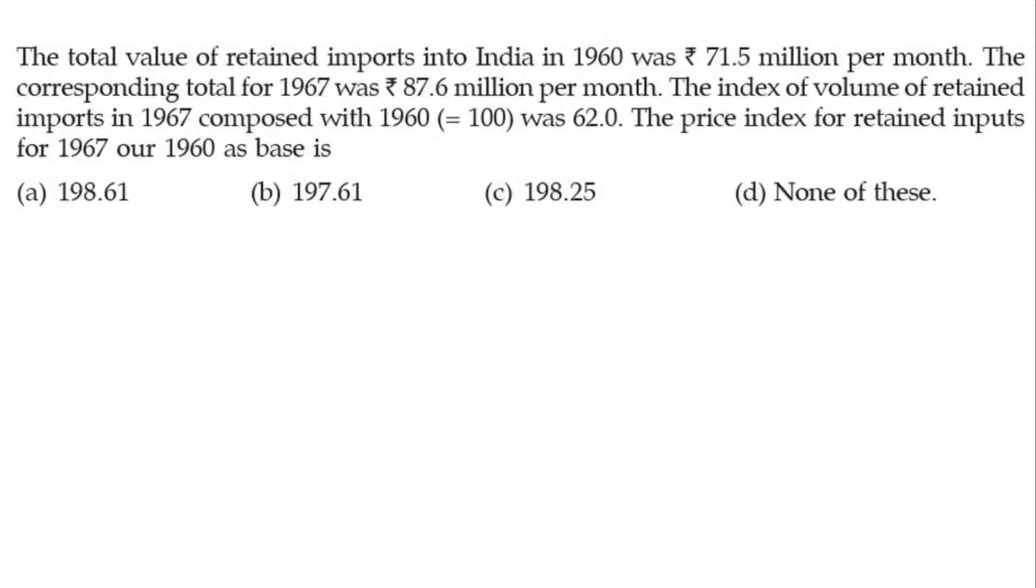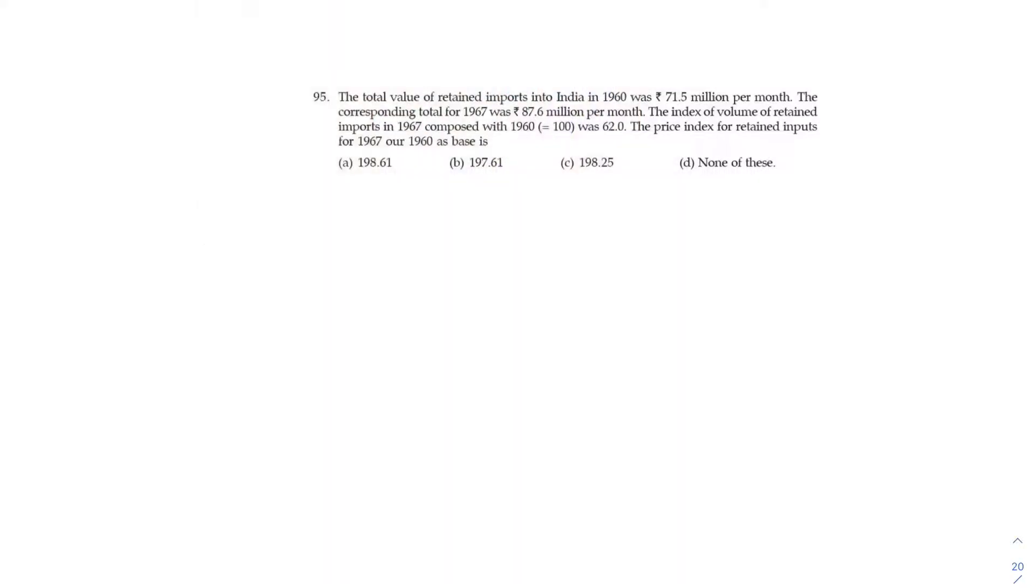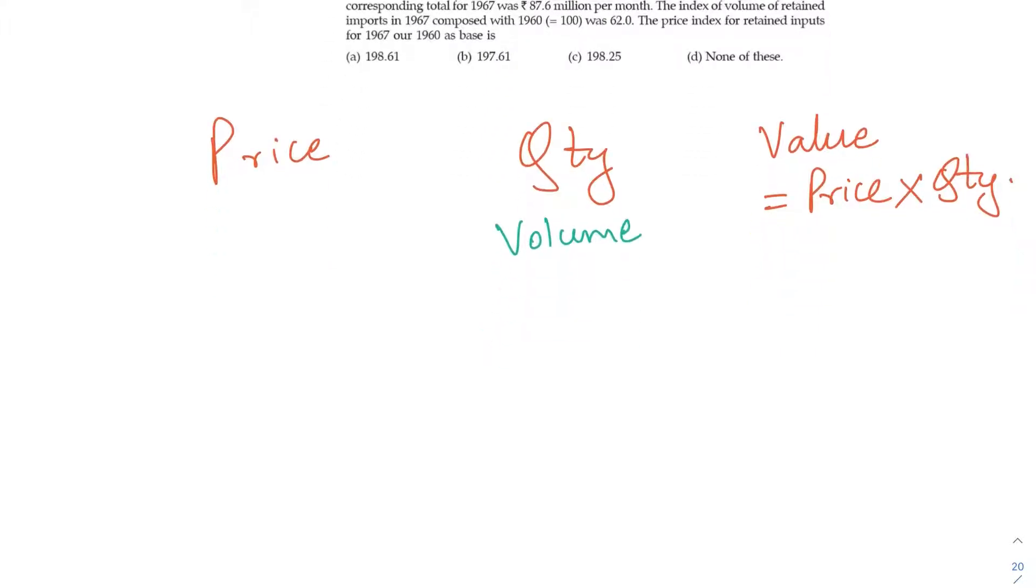So you're asked how much is the price index number of 1967 compared to 1960 as base. Let us solve this. First of all, if your basics are good, there is something known as price, then you have quantity, and then you have value. The value is nothing but price into quantity.